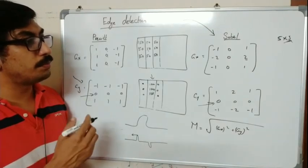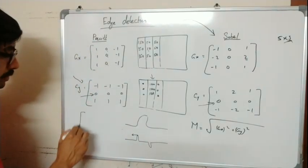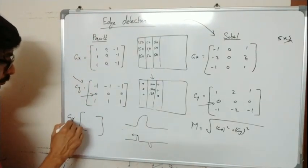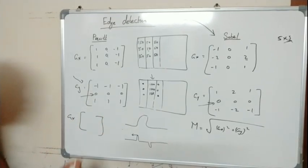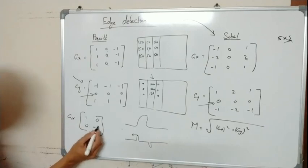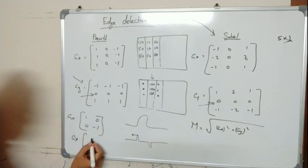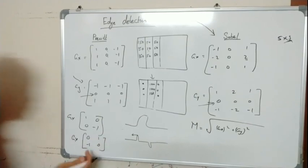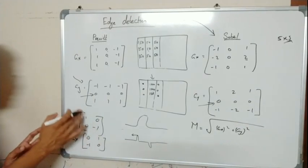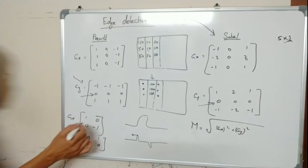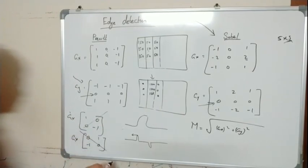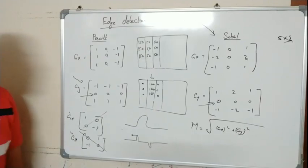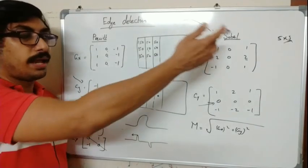Roberts is a 2×2 kernel used to find diagonal edges. The Gx mask is [1, 0; 0, −1] and the Gy mask is [0, 1; −1, 0] — it takes the difference of diagonal pixels. One diagonal direction is captured by Gx and the other diagonal by Gy. With a 5×5 kernel other edge angles can also be calculated in a much better way.